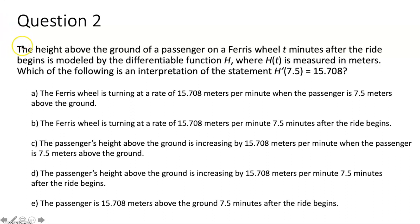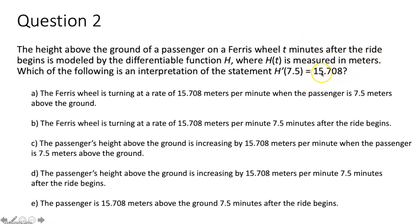Question two says the height above the ground of a passenger on a Ferris wheel t minutes after the ride begins is modeled by the differentiable function h, where h of t is measured in meters. Which of the following is an interpretation of the statement h prime of 7.5 equals 15.708? Since h of t refers to the height above the ground, h prime of t would be the rate of change of the height above the ground — so 15.708 meters per minute, 7.5 minutes after the ride begins.